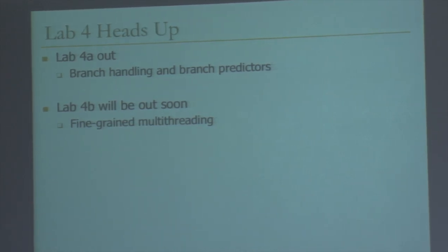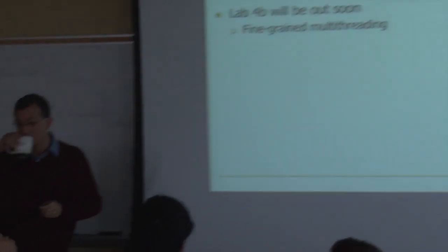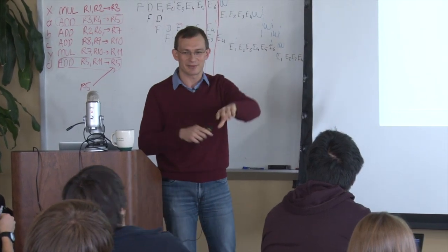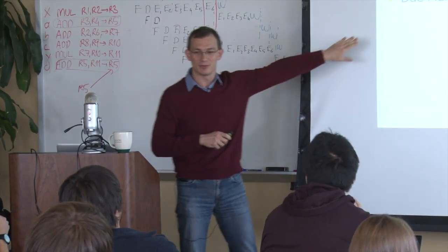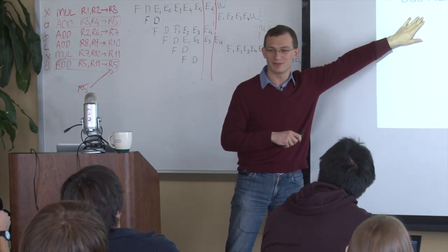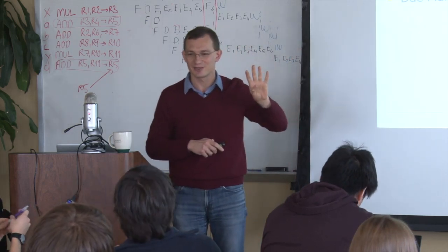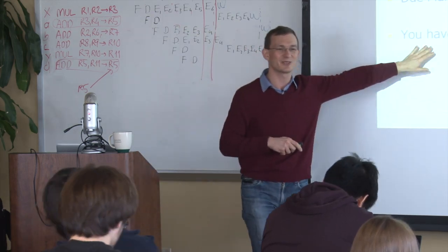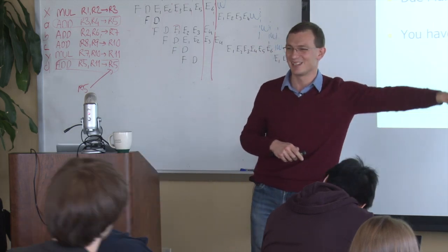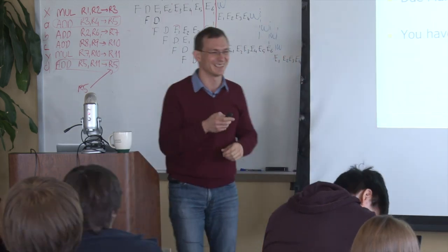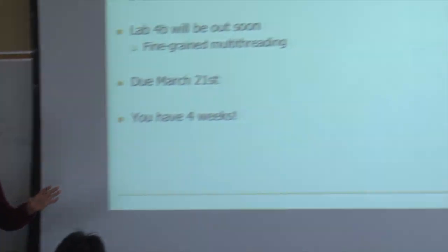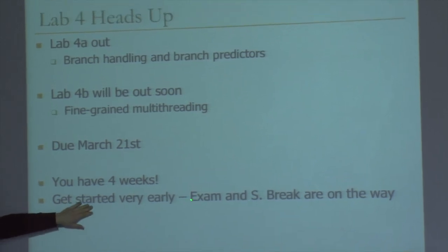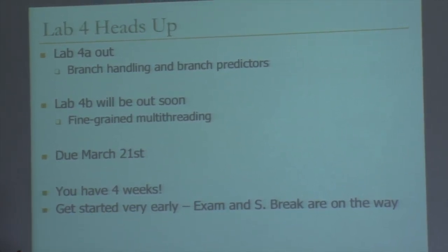The deadline for lab 4A was listed as two weeks, but that deadline is incorrect — we fixed it. The deadline for both 4A and 4B is March 21st, which is four weeks from now. So you have four weeks for lab four, which means no one is going to use late days. The caveat is you should get started very early, because the exam and spring break fall within those four weeks.